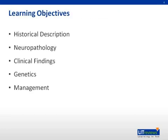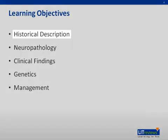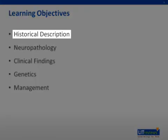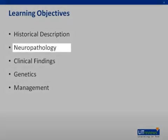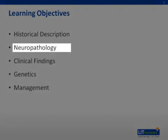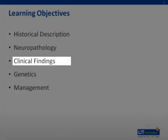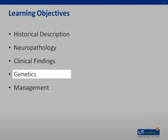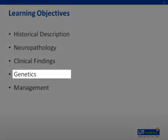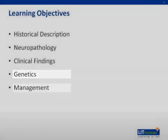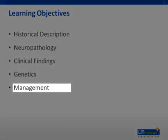Our goals for this presentation are as follows: we will review the historical aspects of Huntington's disease, review the known neuropathology and correlated clinical findings, discuss the genetics and how this correlates with diagnosis, and finally, what we can do to manage these patients.